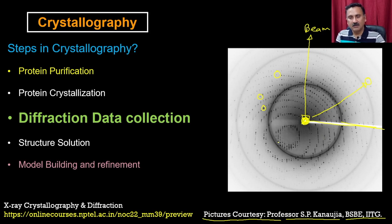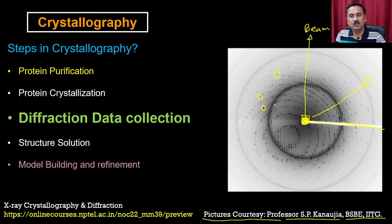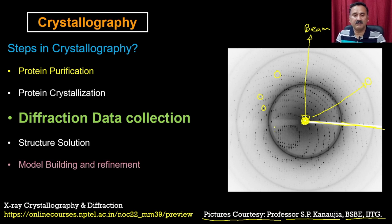What you see here is the origin of the diffraction pattern. As you move towards the outer side, it is actually going to tell you how good the diffraction you are getting. As long as you are getting the diffraction pattern, the resolution is higher and higher and the diffraction is good. You can see that all the spots are discrete, all the spots are not merged. In some cases you may see one spot merging with a second spot, which is actually going to create trouble when you are doing the structure solution because it is actually going to interfere in terms of preparing the electron density map.